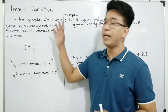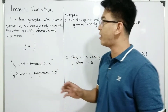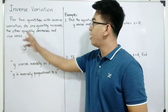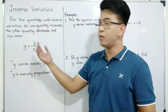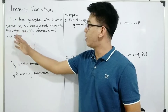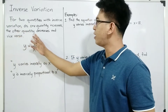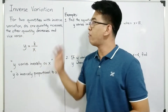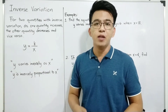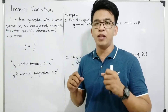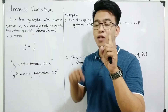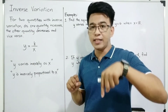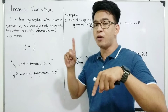So, we have here the inverse variation. Let's read the definition. For two quantities with inverse variation, as one quantity or variable increases, the other quantity decreases and vice versa. Comparing inverse variation with direct variation: in direct variation, if one quantity increases, the other quantity will also increase. And if one quantity decreases, the other will also decrease.